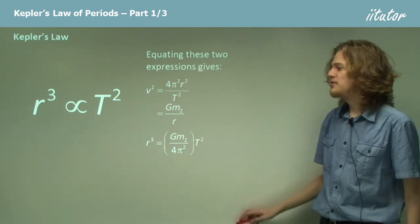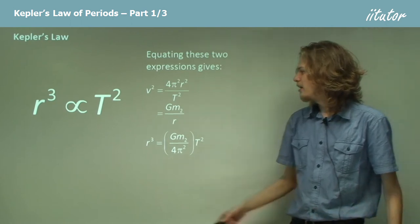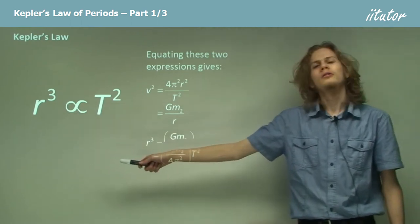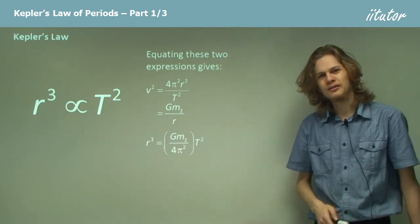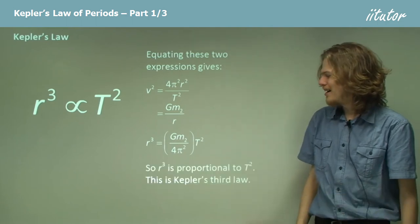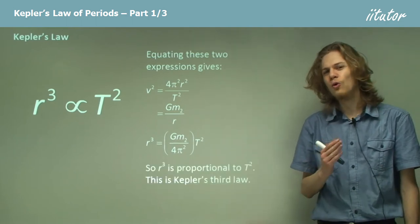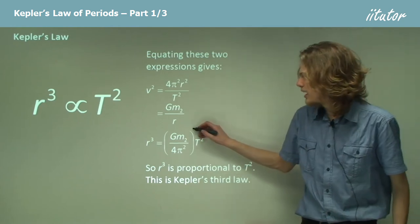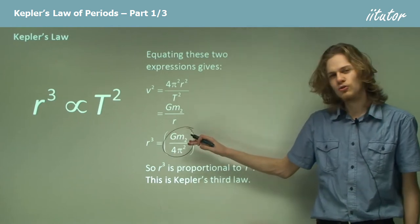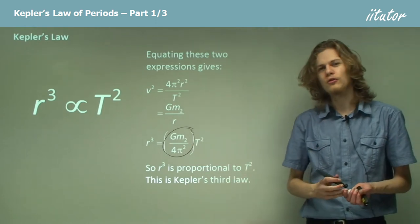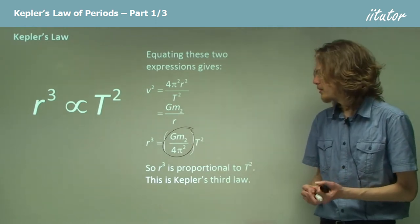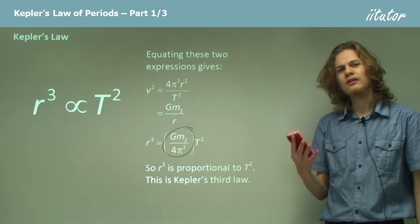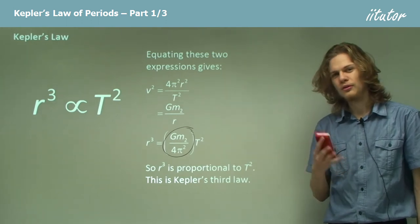So now we have an equation that tells us that r³ is proportional to T². Would you look at that? That's Kepler's third law, that for a given constant, in this case the mass of the central body times the gravitational constant over 4π², we can say that r³ is proportional to T².